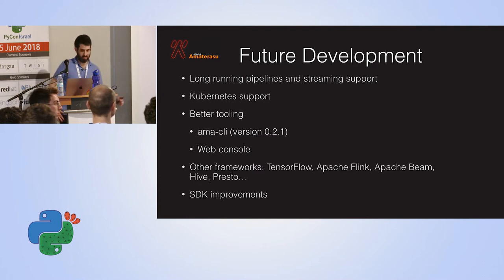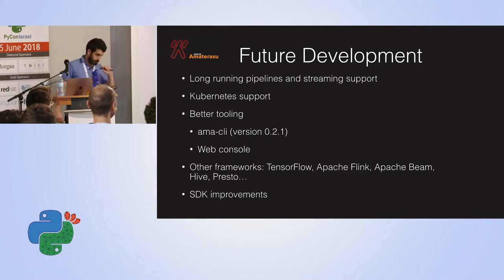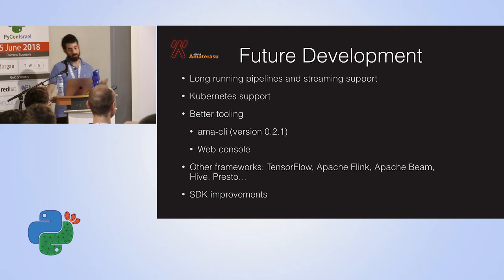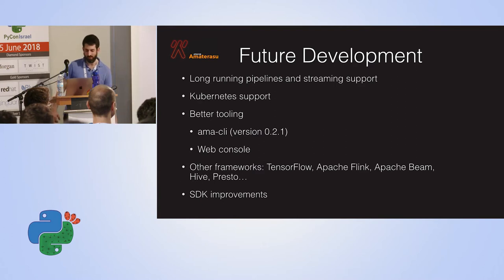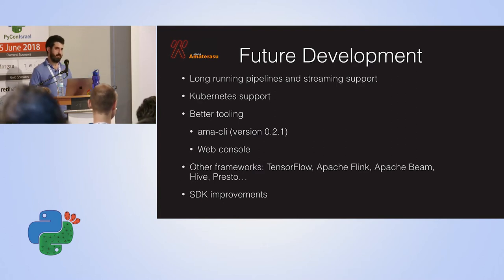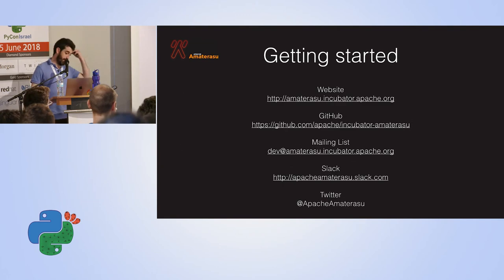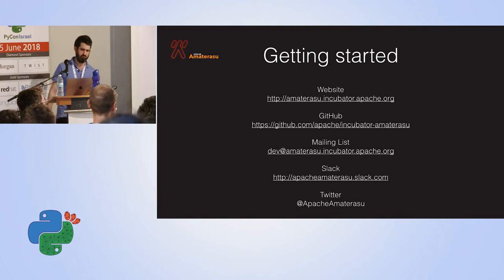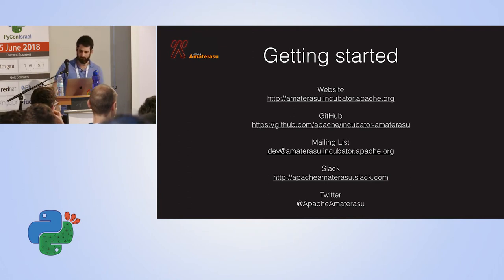For next versions: upcoming is a new CLI and the long-running pipelines I mentioned earlier, Kubernetes, and TensorFlow, Flink, Beam — all the things. If you want something, tell us, hopefully we'll make it. And more SDK improvements including an SDK in Python. The presentation will be available through the convention, or I will post a link on my Twitter account.